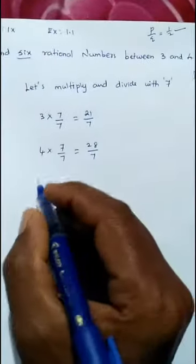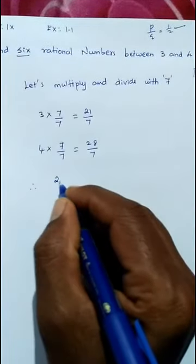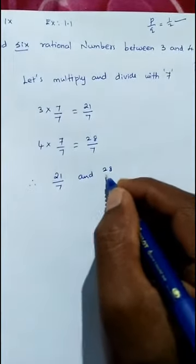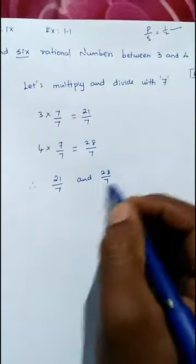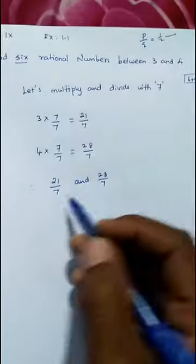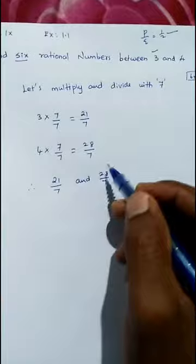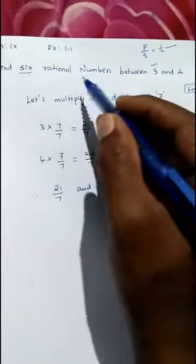The rational numbers are 21 by 7 and 28 by 7. See, if you cancel this again, you'll get 3 and 4 only. Because 7 times 1 is 7, so you got 3. Next, 7 times 1 is 7, so you got 4.